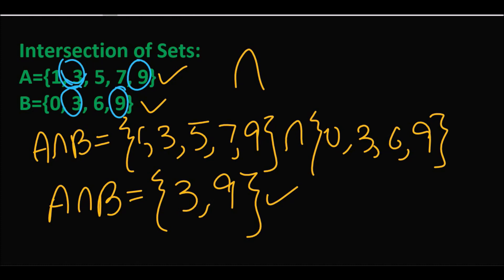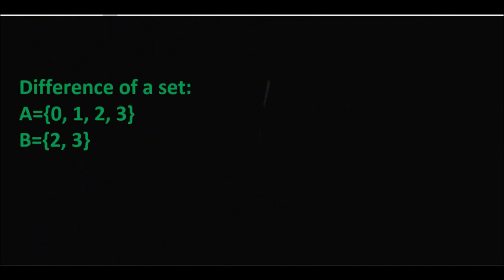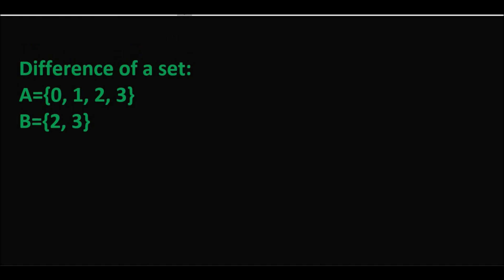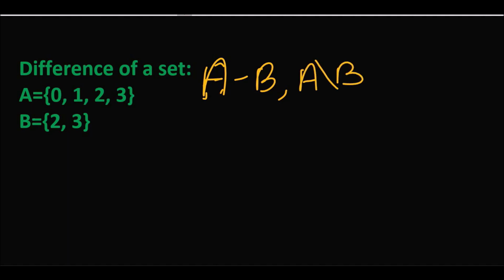اس کے بعد ہمارے پاس آتا ہے difference of the set۔ Difference of the set کو different symbols سے represent کر سکتے ہیں: یا تو A minus B، یا تو A backwards slash B (A\B)۔ ان دونوں کا ایک ہی مطلب ہوتا ہے۔